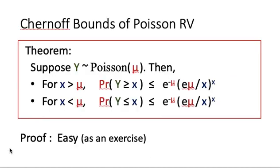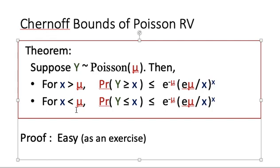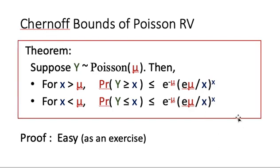Once we have the moment generating function, we can get the Chernoff bounds easily. Let y be a Poisson random variable with parameter mu. For any value x greater than the mean, the probability that y is greater than or equal to x is less than or equal to e to the power minus mu multiplied by e mu over x to the power x. For the left tail, when x is less than the mean, the probability that y is less than or equal to x has the same form. The derivation is left as an exercise.